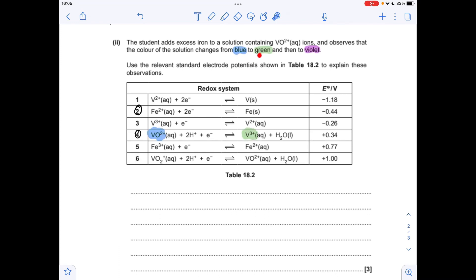So if we start by explaining this blue to green color change, if we have a look at the electrode potentials for the two systems, you can see system 4 has got a more positive standard electrode potential than system 2. So that means that system 4 will move in the forwards direction. There's your blue to green color change. System 2 will go in reverse. So I'm just summarizing like this. So the blue to green color change is brought about because system 4 has a more positive standard electrode potential than system 2, meaning that system 4 moves from left to right, producing that green V3+ ion.